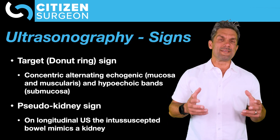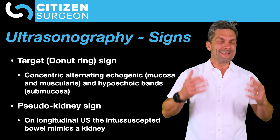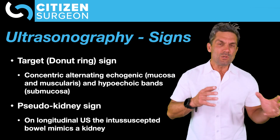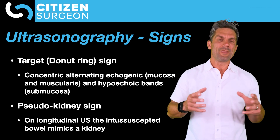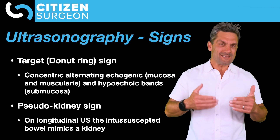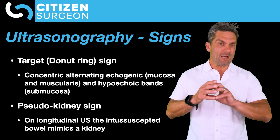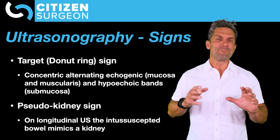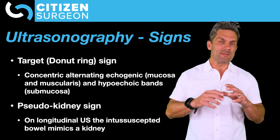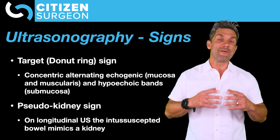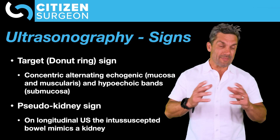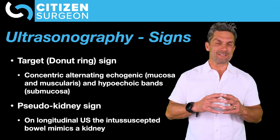We have two signs to think about with ultrasound. Number one is the target sign, which we just described. Number two is the pseudokidney sign — where instead of a cross-sectional view, you take the longitudinal view, and the intussusceptive bowel mimics the look of a kidney, with the mesentery and then the cortex of the kidney itself.